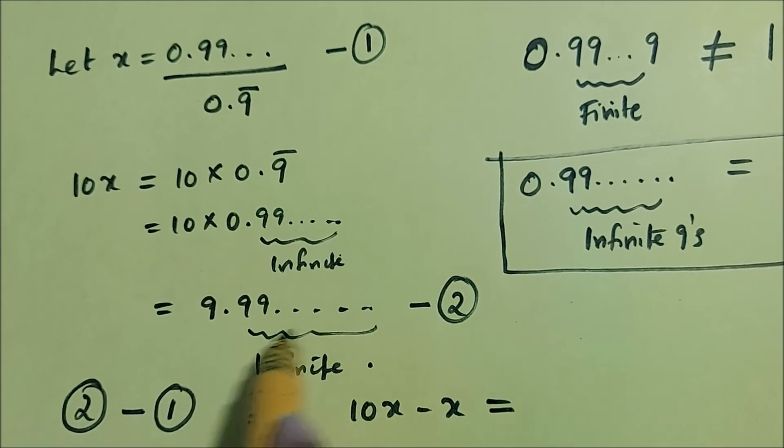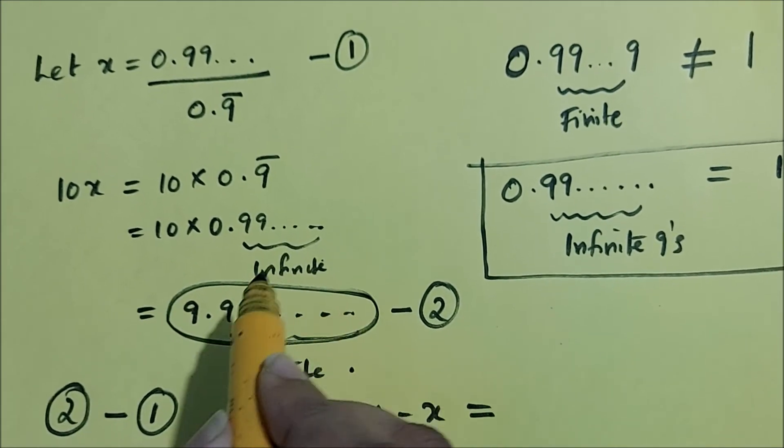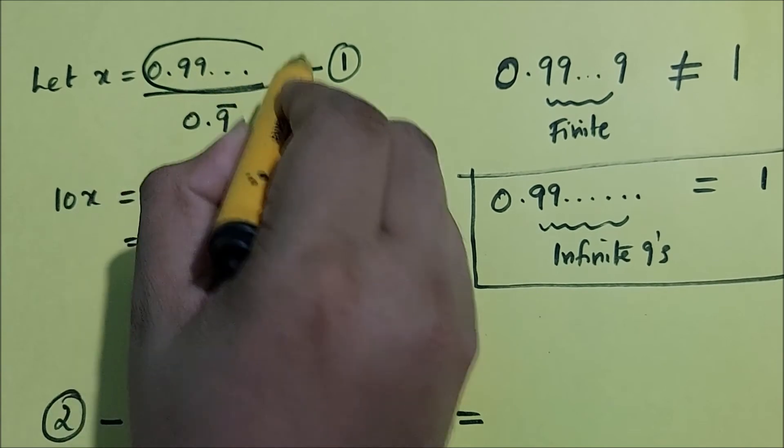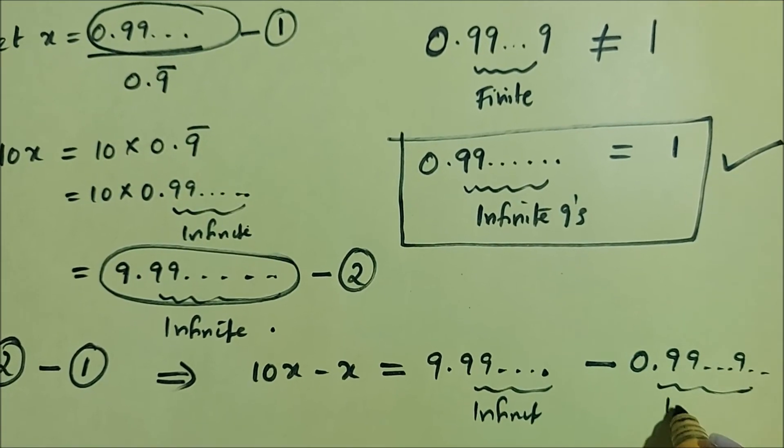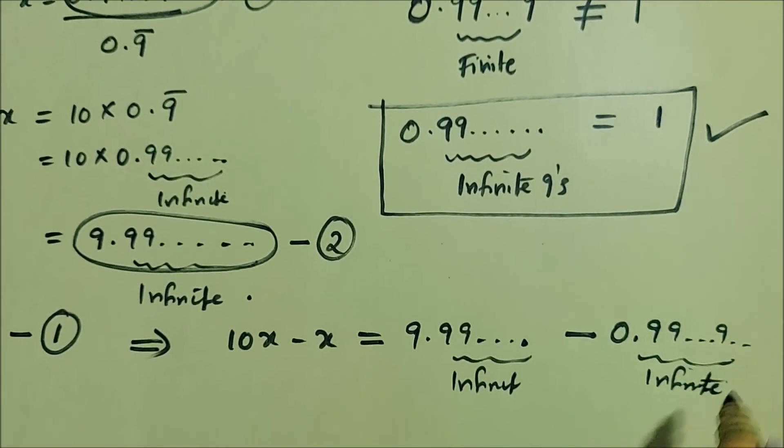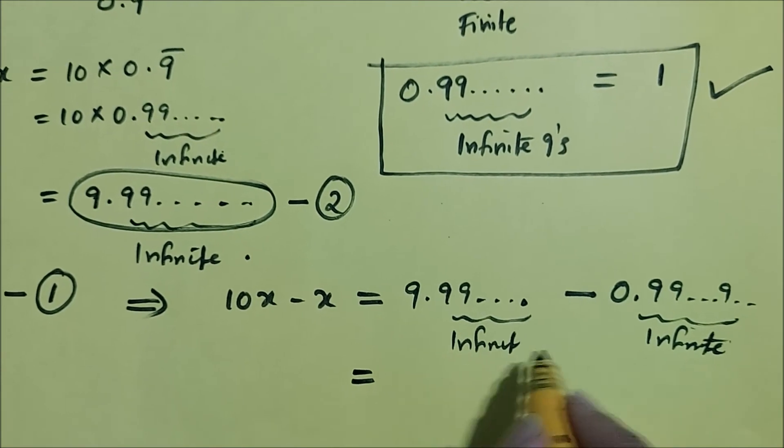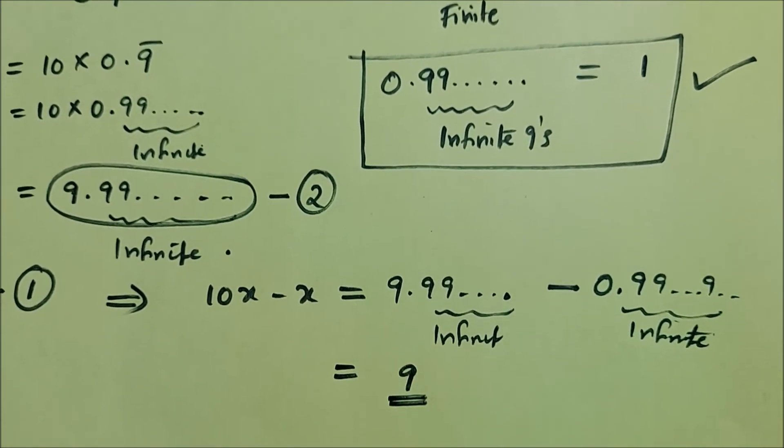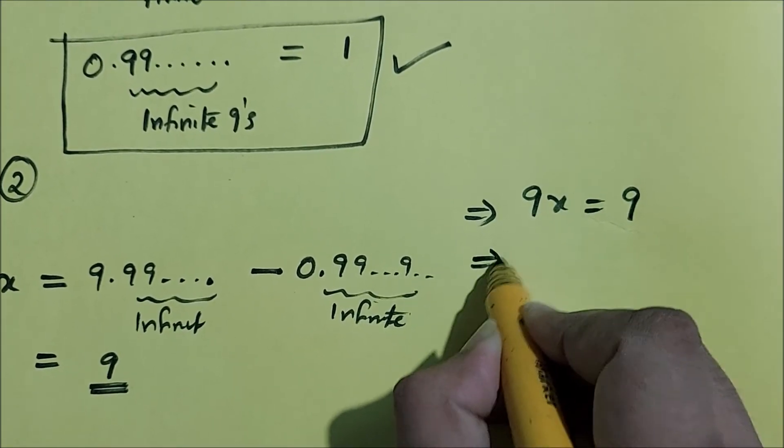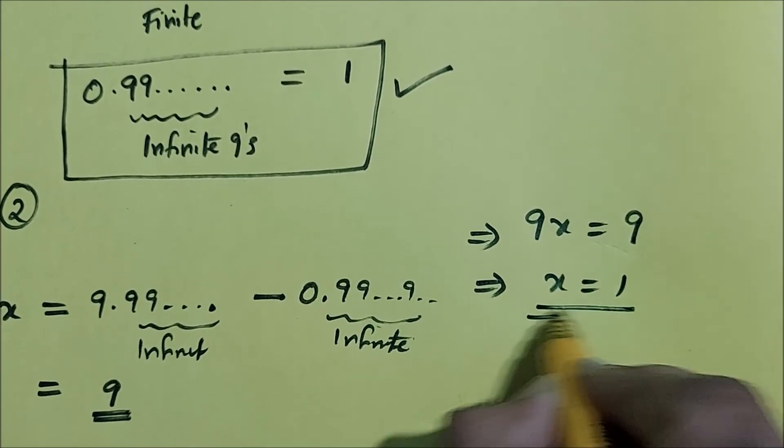10x minus x is the same as 9 point infinite 9's minus 0 point infinite 9's. So 9 point infinite 9's minus 0 point infinite 9's is 9. So 10x minus x equals 9, which implies 9x equals 9, which implies x equals 1.